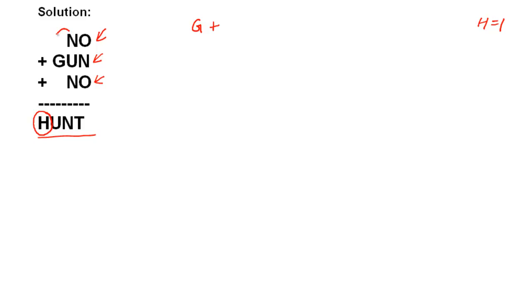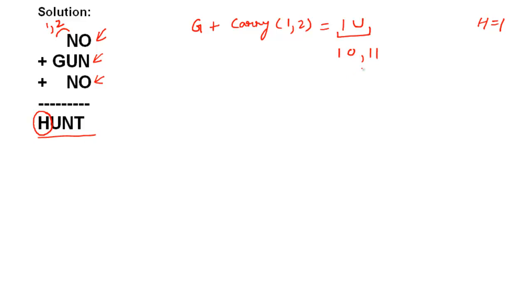Now look at the situation: G + carry (which can be 1 or 2) is giving us HU, where H = 1. Looking at the column N + U + N: this gives a carry, which can be 1 or 2. So G + carry equals 10 or 11. If it's 11, that gives U = 1, but 1 is already assigned to H. Therefore U = 0 — that is confirmed.